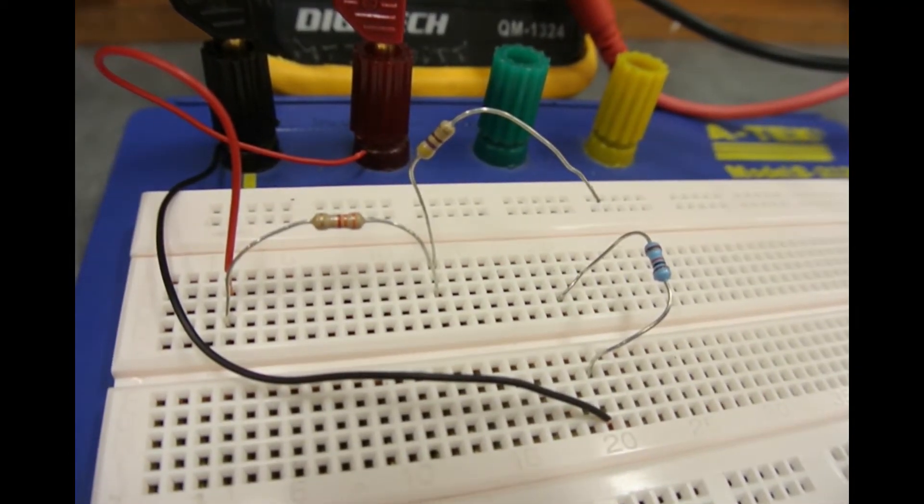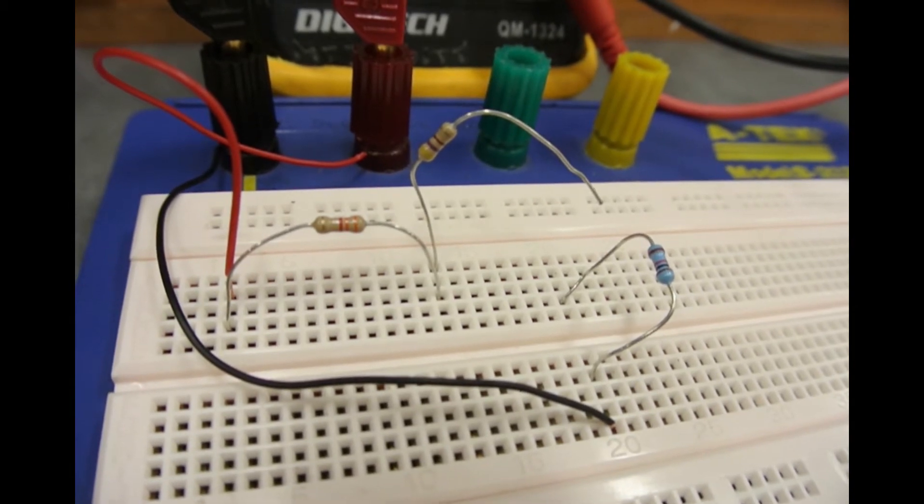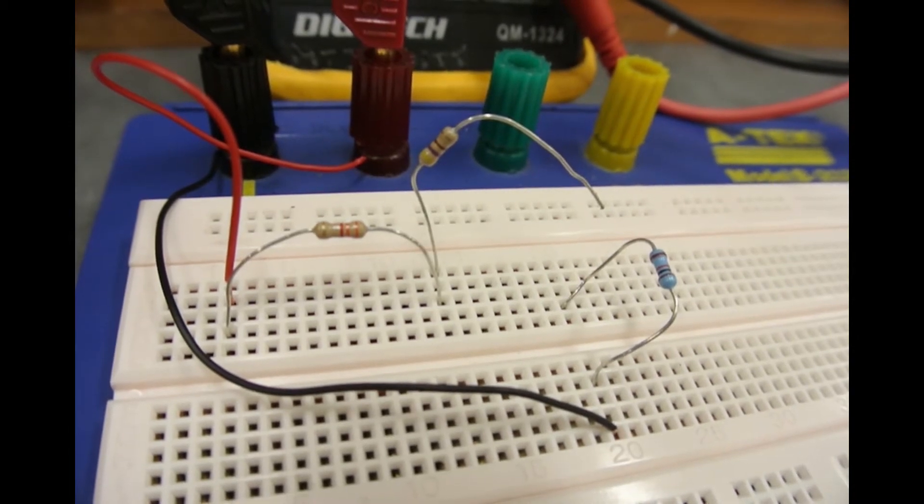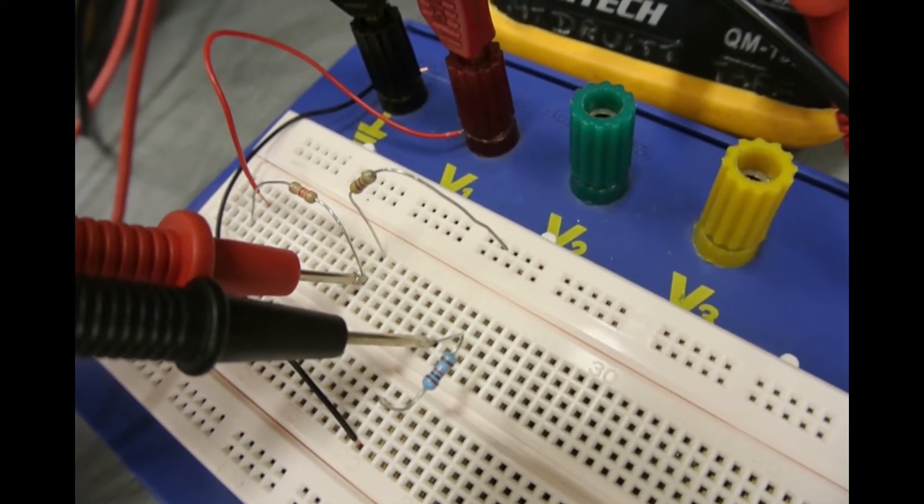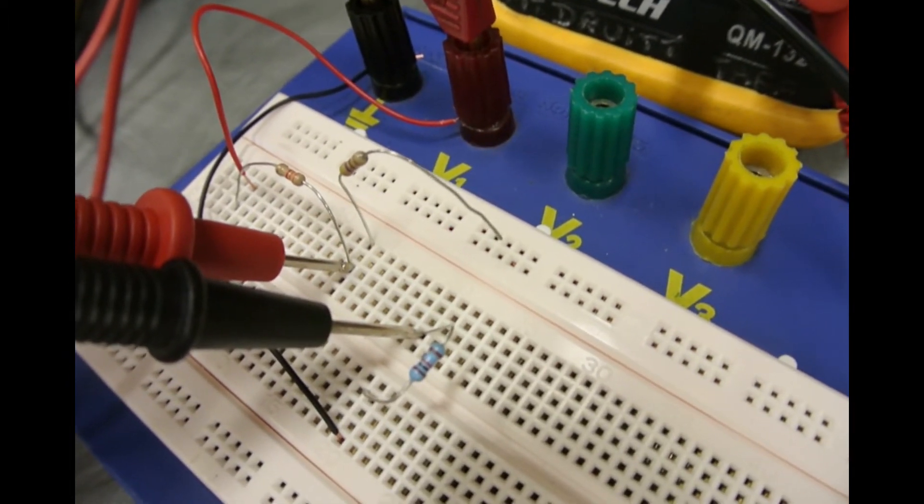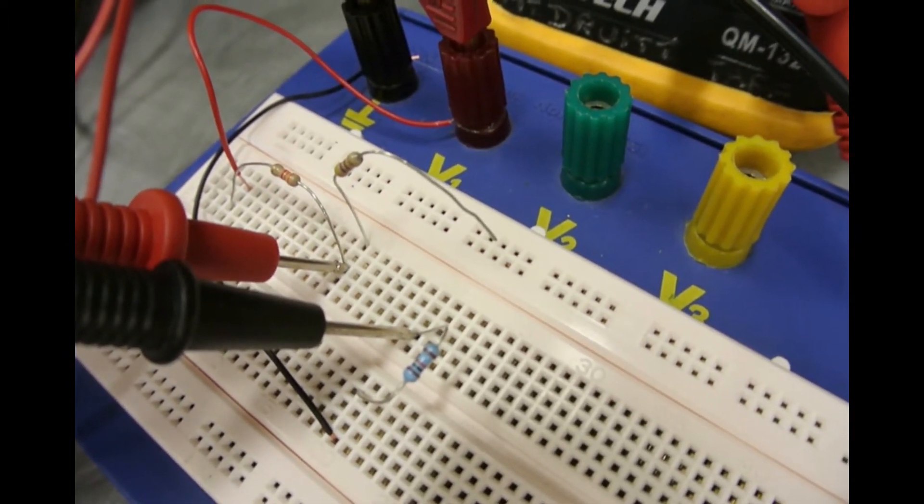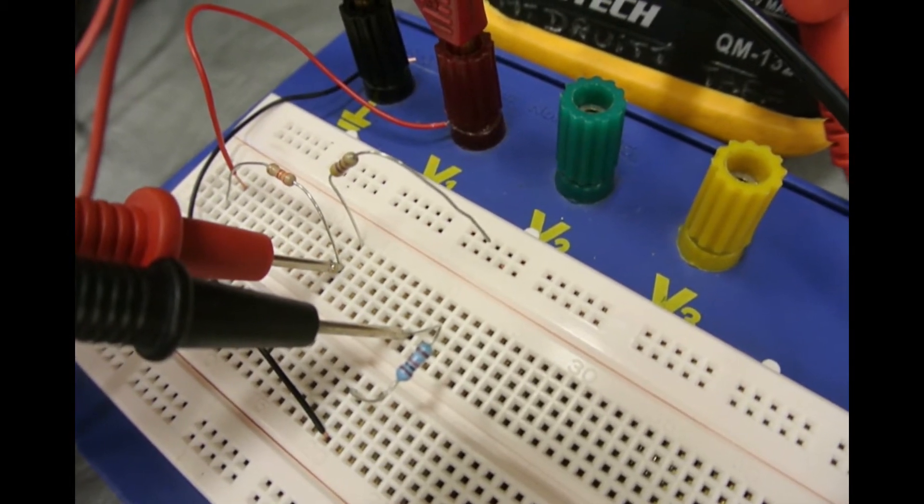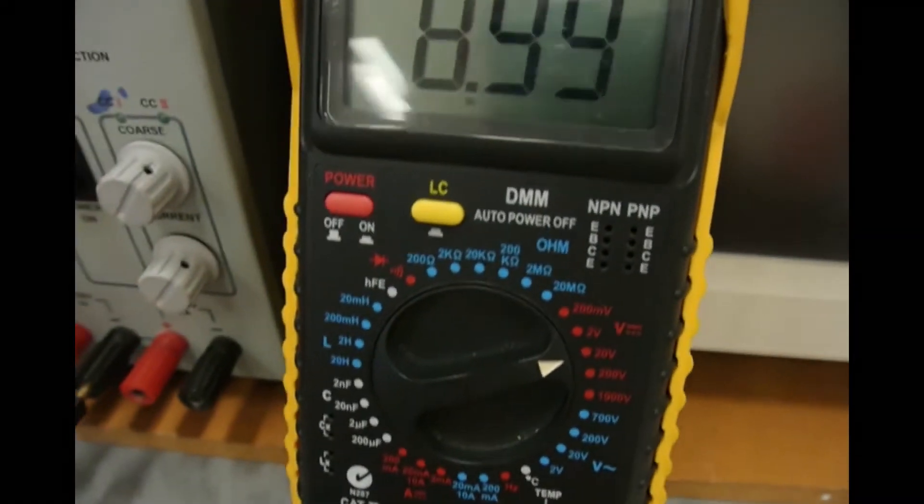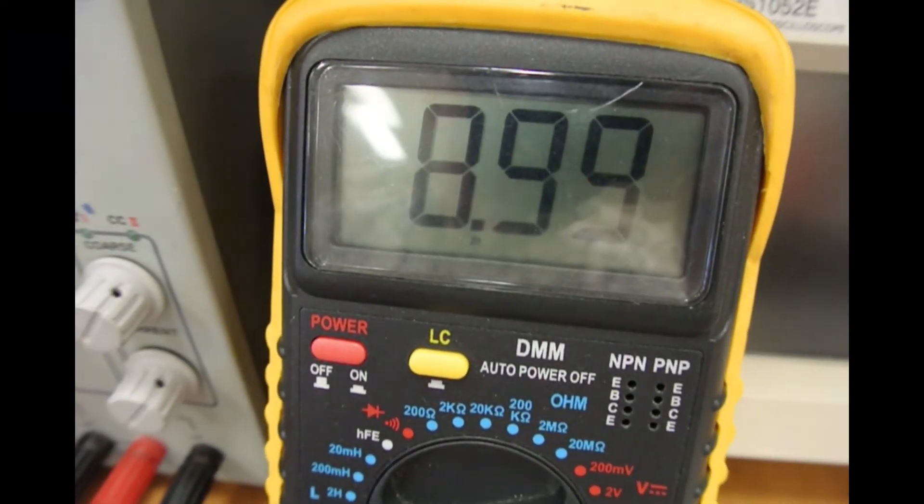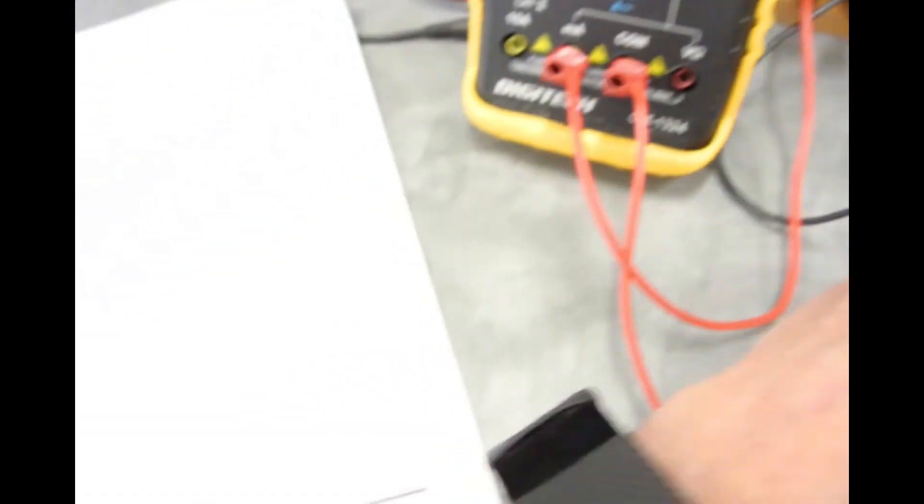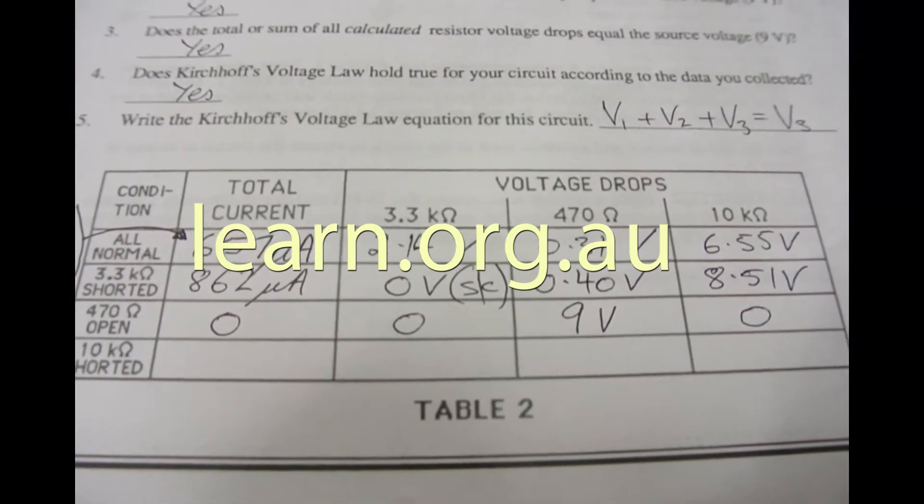The next part of the lab says to open the 470 ohm resistor and record the voltages and current flowing in the circuit. You can see I've opened the 470 ohm resistor by lifting one leg out of the breadboard. By the time I proceed and measure the voltage across where the 470 ohm resistor is, I actually measure the full circuit voltage of 9 volts on the meter. So we go ahead and record that in the table.